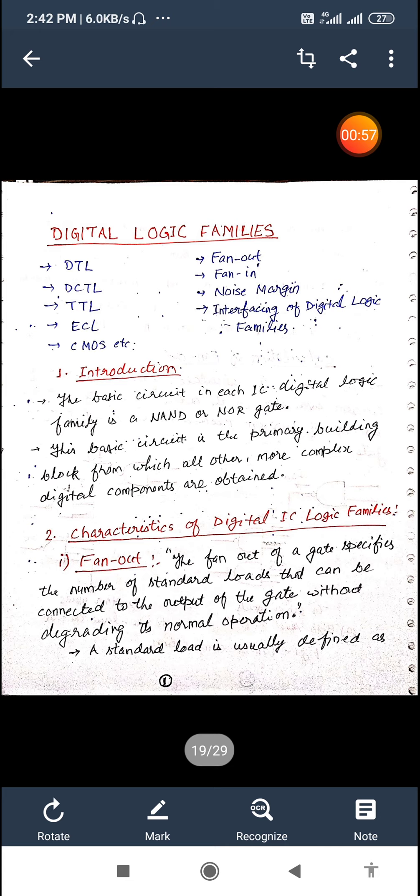So first of all let us see the fan out. So what do you mean by fan out? This is very important consideration. We can say that the fan out of a gate specifies the number of standard loads that can be connected to the output of the gate without degrading its normal operation. Fan out, this is very simple, how much gates are connected to its output that is the fan out.